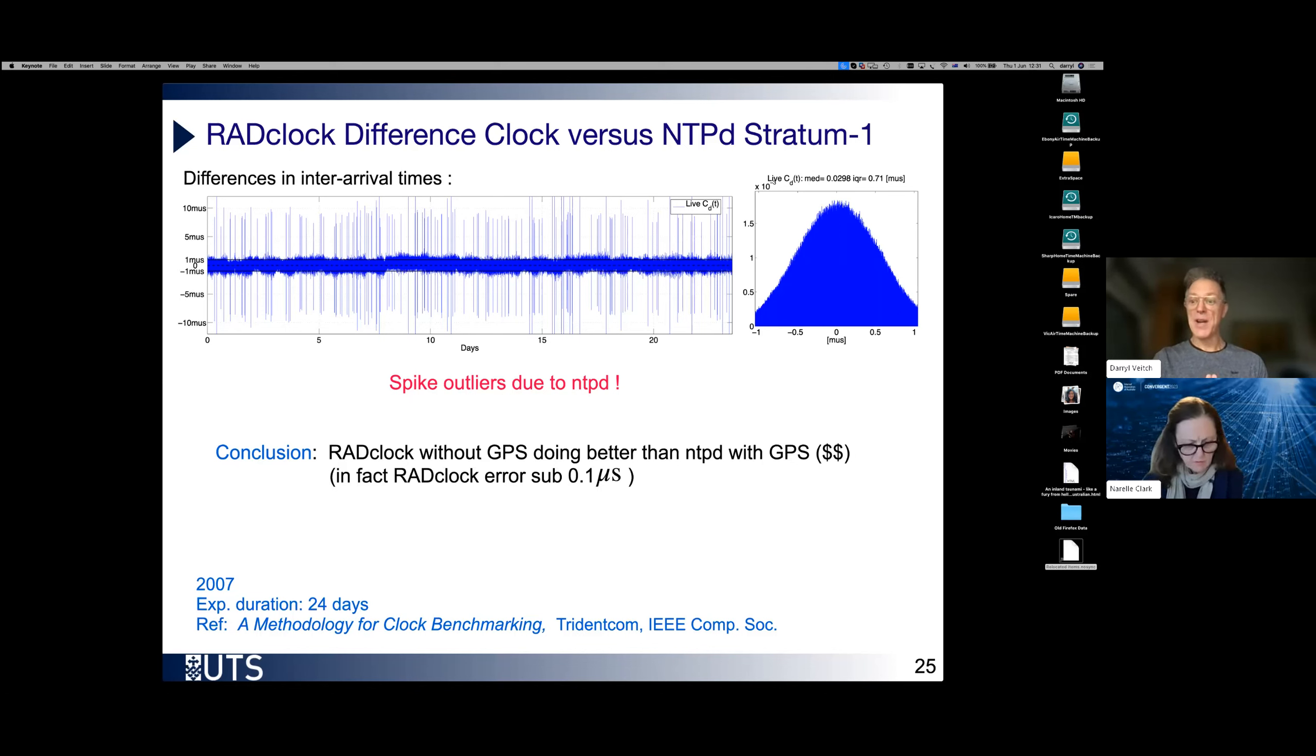And we see that the histogram is basically all sitting within just a one microsecond difference. So they're agreeing very closely. And as they should, because this is a stratum one clock, this is an NTPD operating in stratum one mode. It's got reference time stamping directly attached. Whereas RADclock does not. RADclock is communicating over the network.